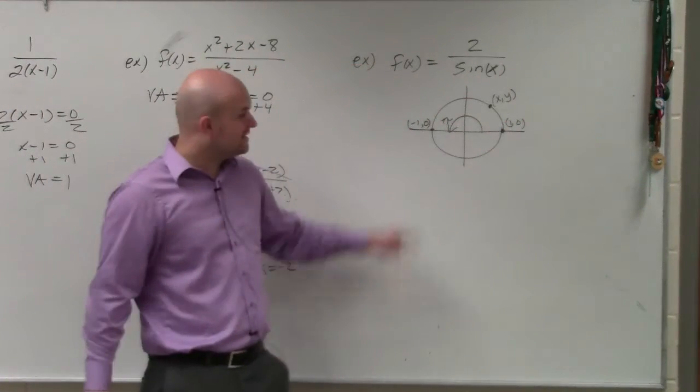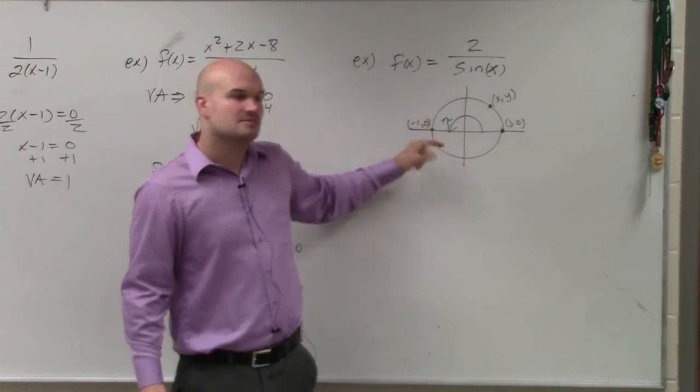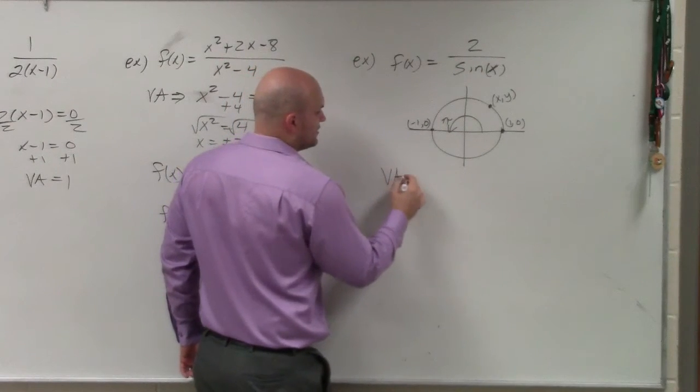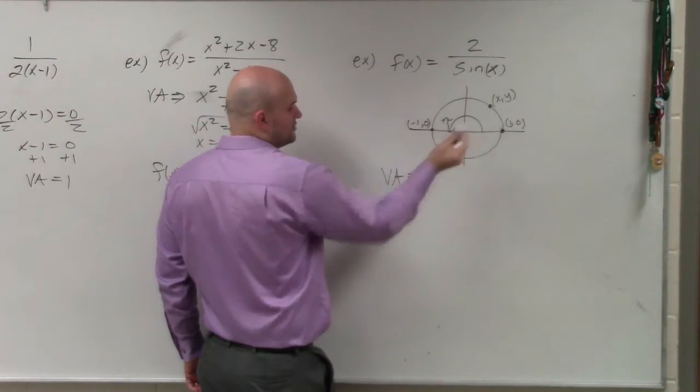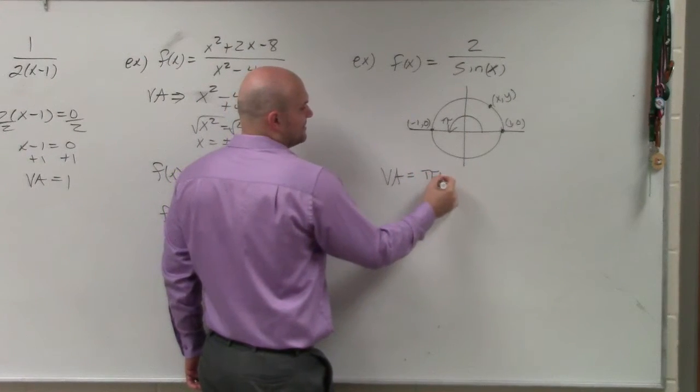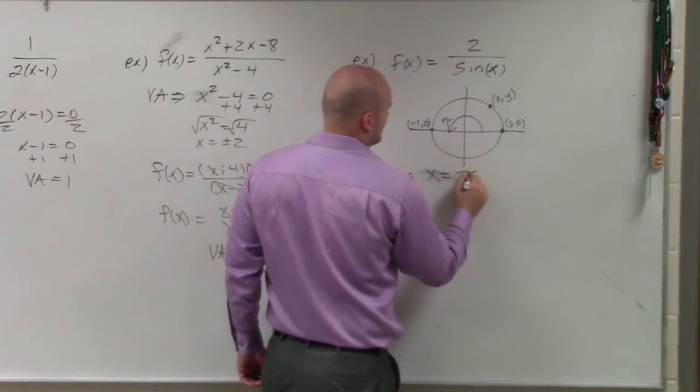And then what I can see is this just keeps on repeating itself, correct? So I know that all the values that I'm going to make is 0. My vertical asymptote is equal to—I'm not going to say 0, because what I'm just going to do is pi n. I'm sorry, x equals pi n.